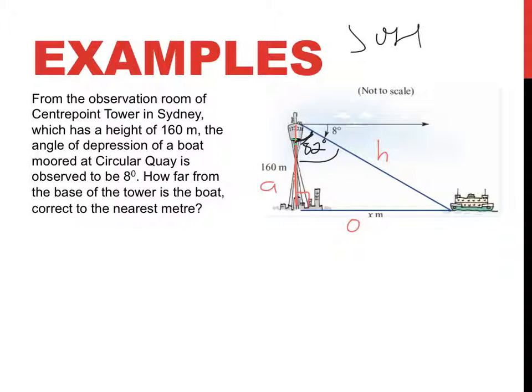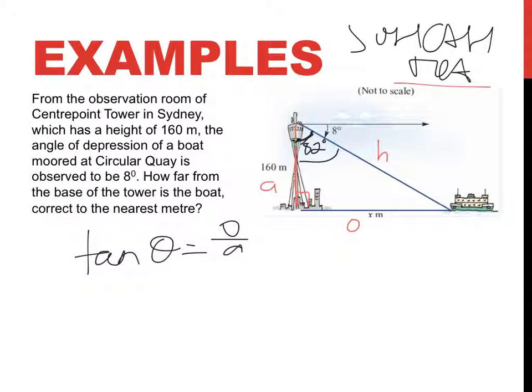So, SOHCAHTOA. I'm going to write it down. And again, I've been dodged, and I've gone with tan. Opposite and the adjacent. So, the tan of whatever angle I have is the opposite over the adjacent. The tan of, in this case, 82 degrees. It's going to equal the opposite, is something I don't know, over 160. Because that's the opposite.